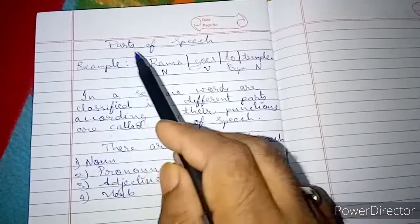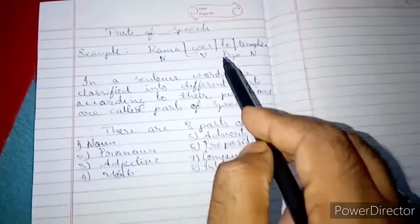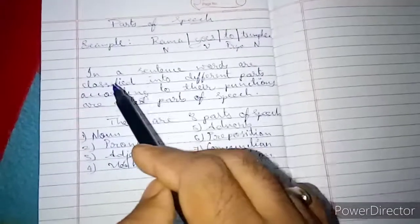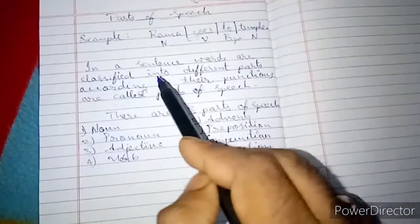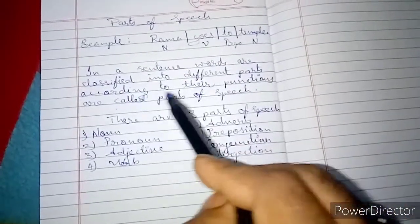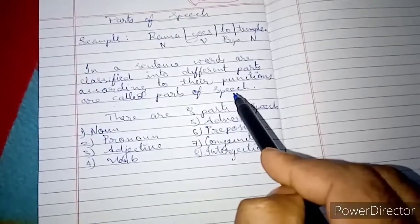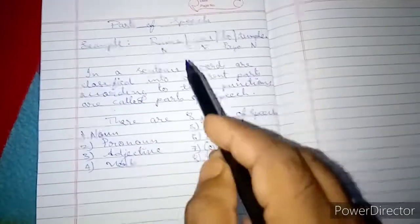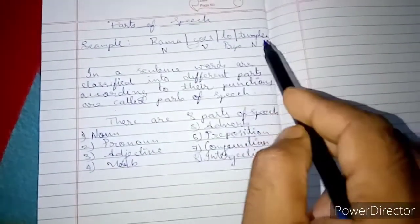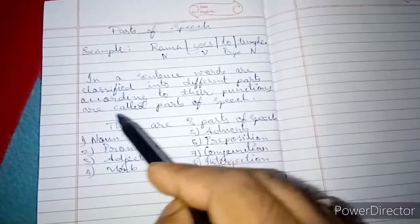So, that is called parts of speech. Now you understood what are parts of speech. Let us come to know what is the definition. In a sentence, words are classified into different groups according to their functions — these are called parts of speech.